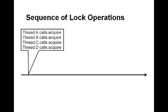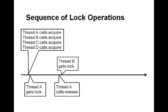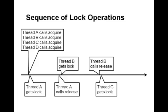This means that if many threads call acquire at the same time, only one thread can get through and hold the lock. All the other threads will keep waiting until the first thread calls release. At that point, one of the waiting threads will return from acquire and keep going. When that second thread calls release, it will allow a third thread to make progress, and so forth, until all threads have returned from acquire and can enter the critical section code.